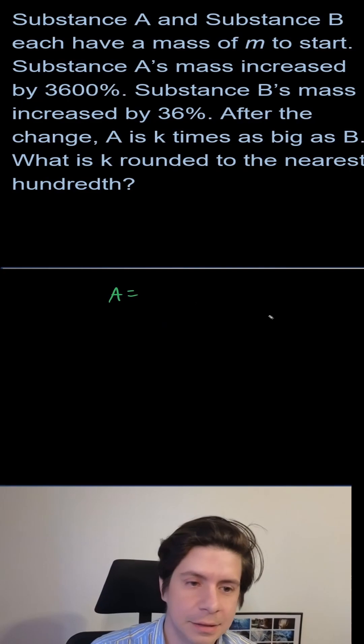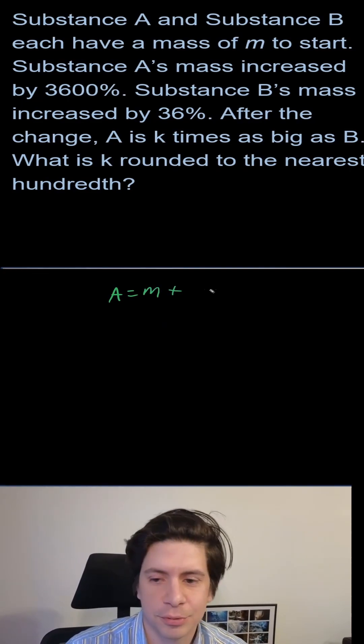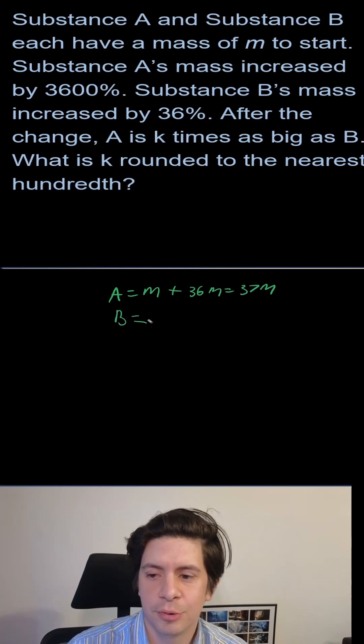Okay, so you're going to add. If we start with m here, but we're going to add 3600%, that as a decimal is going to be 36m. So we get 37m.